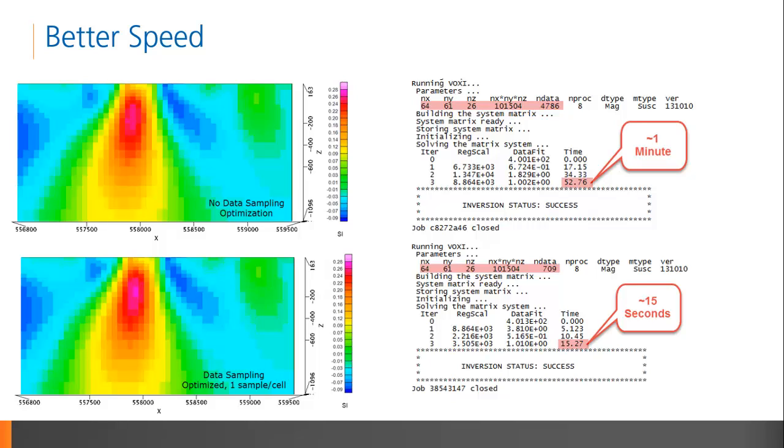You'll note that the results are not very different, proving that you do not sacrifice the model results by optimizing data sampling. The faster inversion, in this case, was approximately four times faster. But we've seen that for larger inversion models, the improvement in speed can be on the order of 10,000 times.